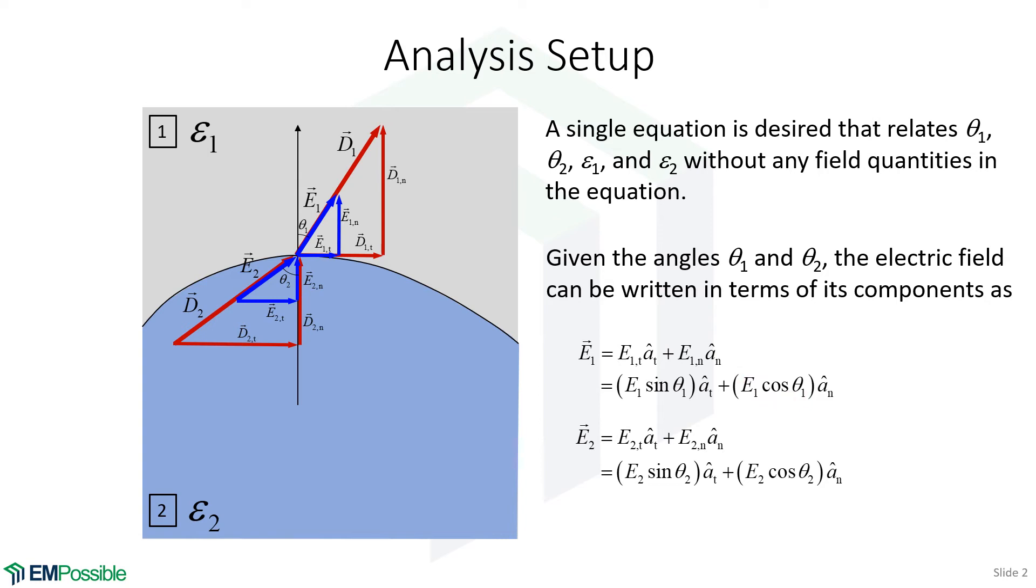And same exact argument for E2. So the tangential component of E2 is the magnitude of E2 times sine theta two. And then the normal component of E2 is magnitude of E2 times the cosine of the angle, theta two.